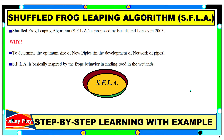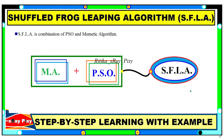This video is based on the Shuffled Frog Leaping algorithm proposed by Eusuff and Lansey in 2003. They were developing a network of pipes and used this algorithm to determine the optimum size of new pipes. This is a nature-inspired swarm-based metaheuristic optimization algorithm, inspired by frogs' behavior in finding food in wetlands. This algorithm is a combination of two algorithms: PSO and the Memetic algorithm. The merits of these two algorithms are combined, making this algorithm simple, fast, and an efficient global optimizer.